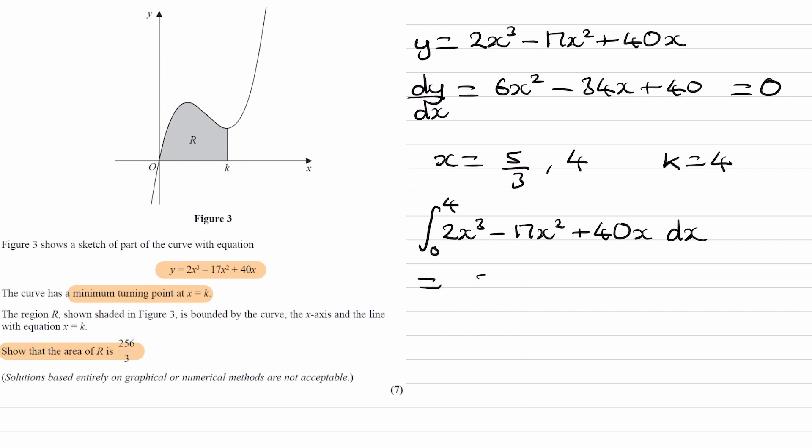So we would raise the power by 1, divide by that new power. So 2 divided by 4 would be 1 half. Do the same thing here: 17 over 3 raised by 1, and then finally 20x squared. So then we put in the limits of 4 and 0.